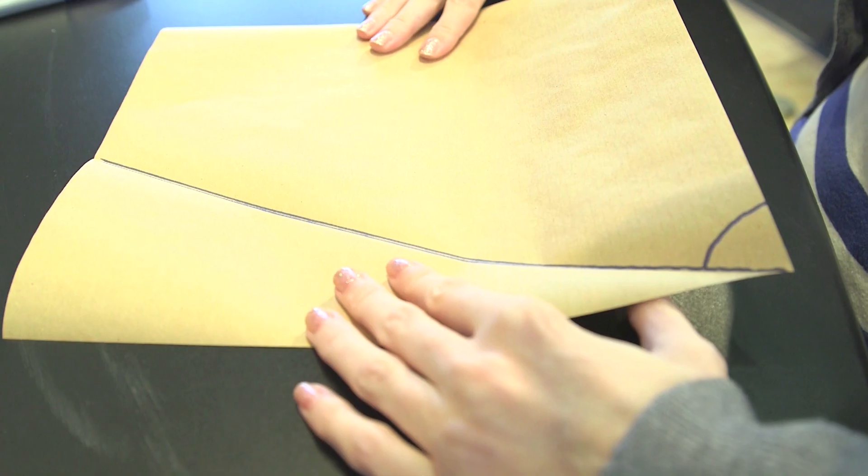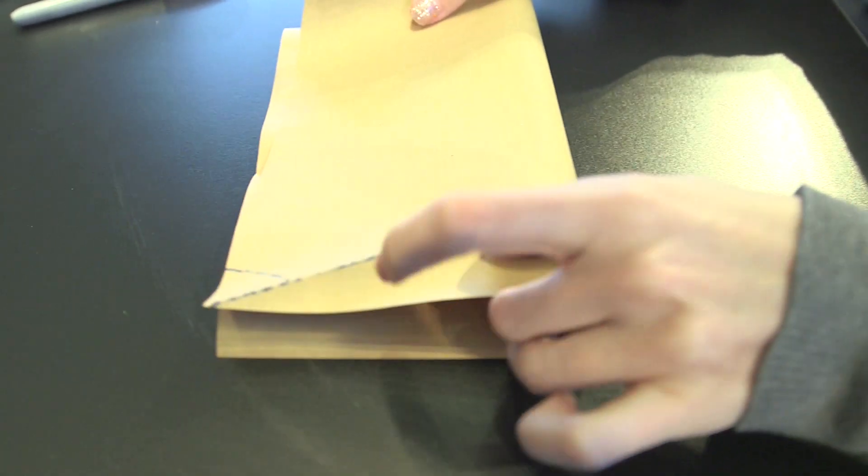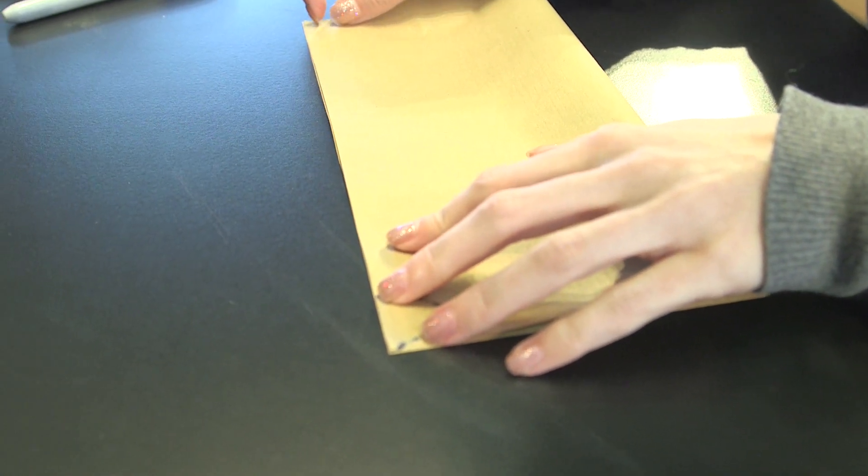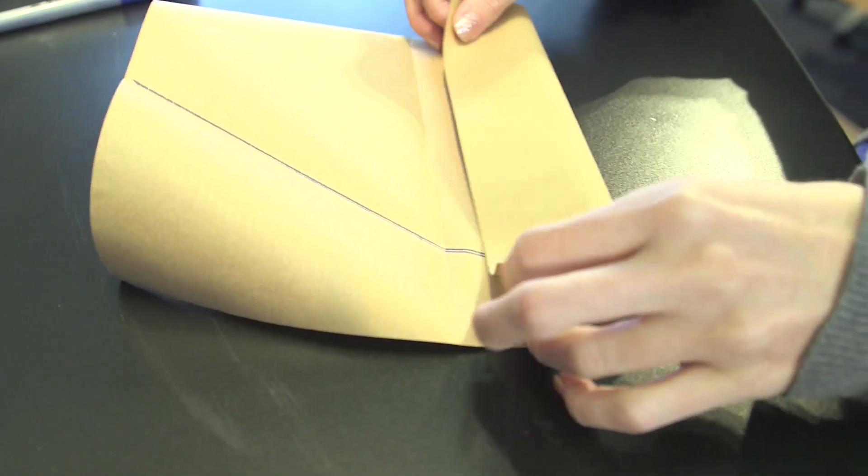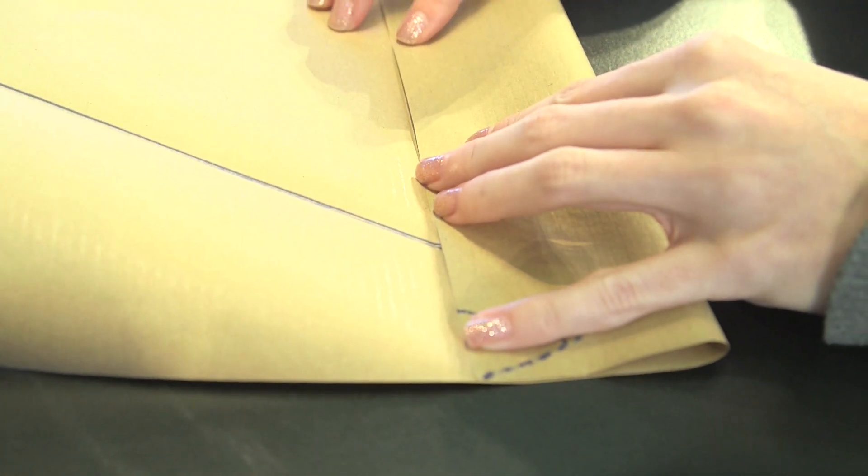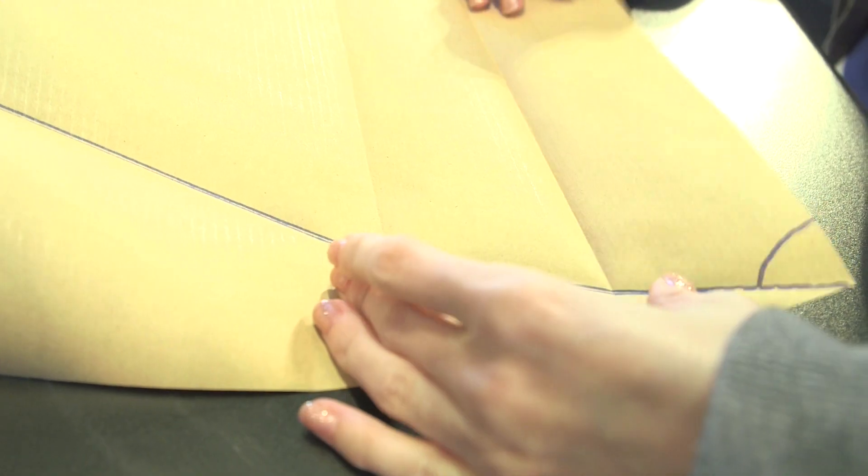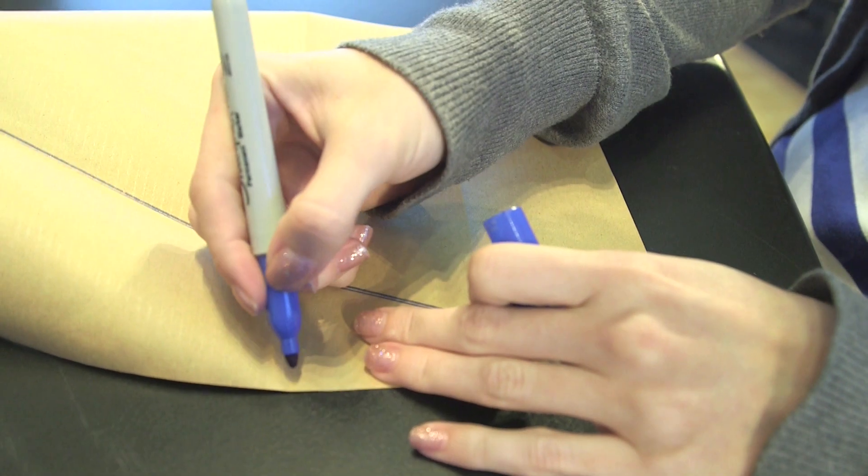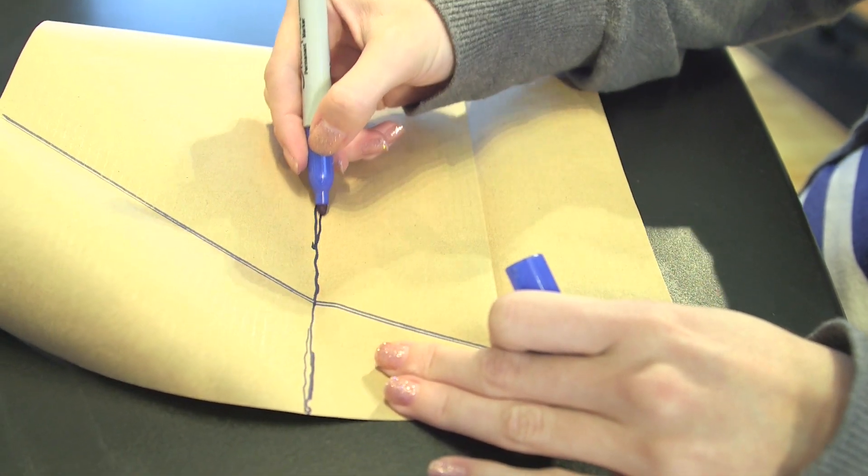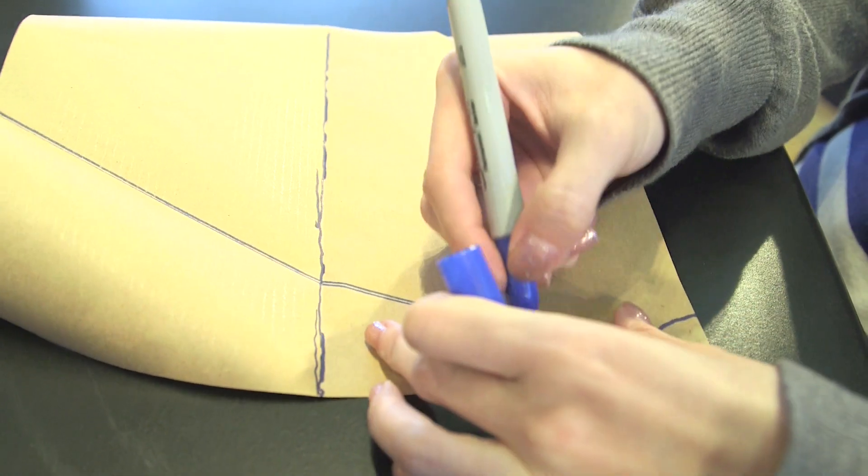So first we fold the paper in half. So I just fold the bottom up to the top so that they match exactly. Then I fold the bottom up to the half. So now I have this crease at the halfway. So now I have these two creases, one up here and one down here.